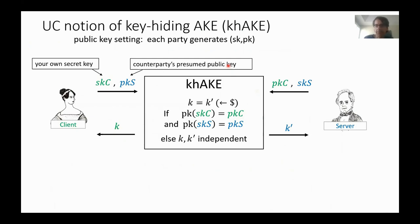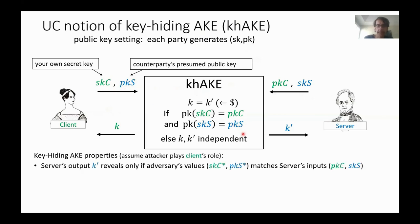Here is the key-hiding AKE. It's in the public key setting where everybody has a secret-public key pair. Unlike the standard AKE notion, we model the presumed public key of the counterparty as an explicit private input of each party participating in the protocol — not defined by names but as explicit inputs. The only output that a party gets is just a random key, and whether it's the same as the other party's key or independent, this person doesn't even know.